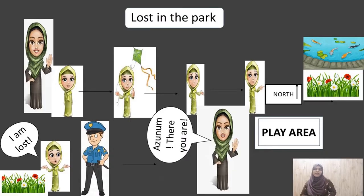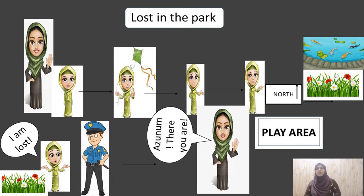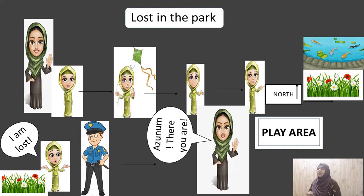This is Azna and her mother. One day they went to the park. When they reached the park, Azna started playing. After some time she saw a kite fly nearby and she tried to catch it. When she realized that she went too far, it was too late — she could not find her mother. She started walking slowly, thinking of all the directions.